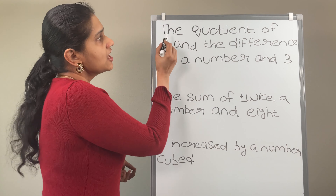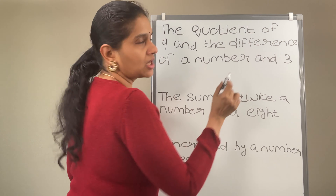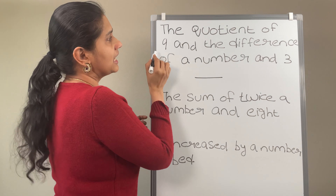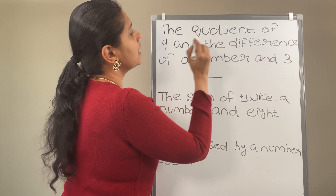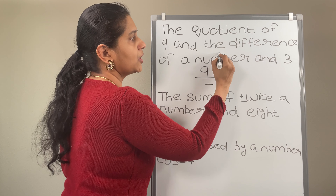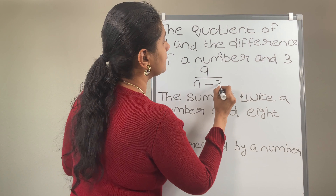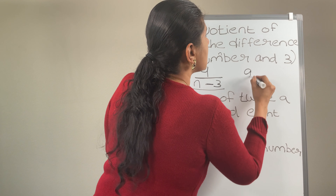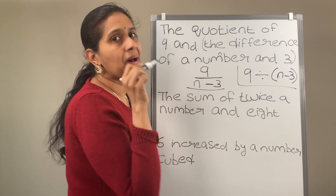Now consider the problem: the quotient of 9 and the difference of a number and 3. Quotient means division, so 9 comes first. Difference means subtraction. Say this number you are referring to as variable n. So difference of a number and 3 will be 9 divided by n minus 3. You can write this as 9 divided by (n minus 3), which should be done first, so we put it in parenthesis.